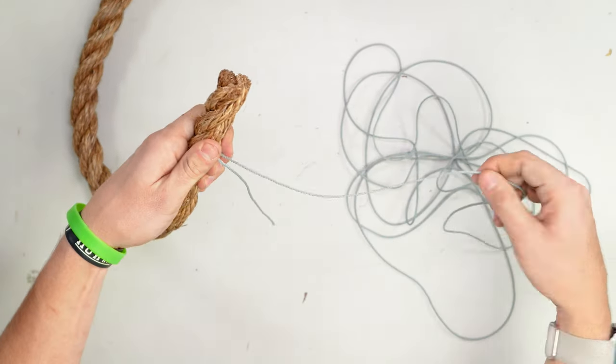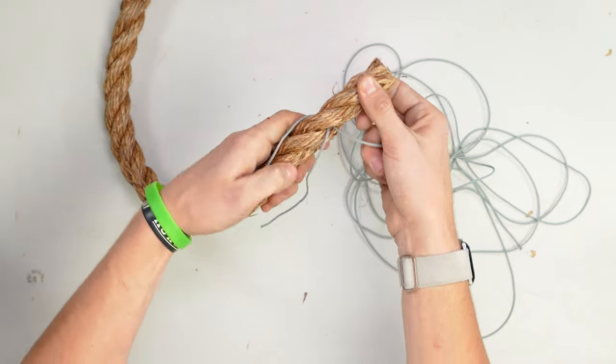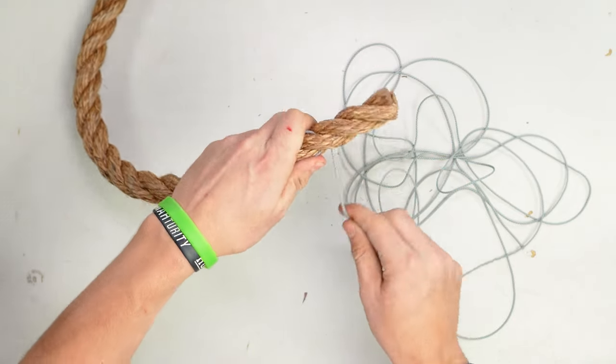Next, we are going to wrap the whipping twine around the rope, holding the short tail and this bunny ear down out of the way.